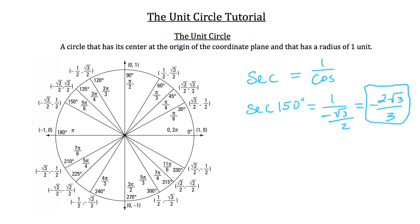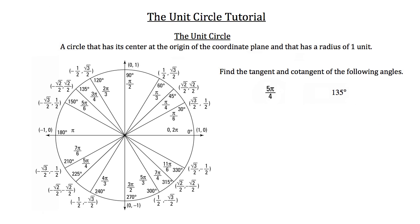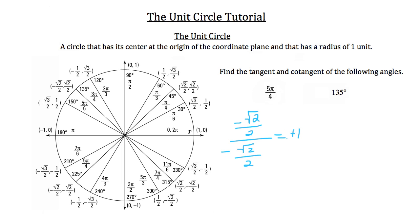Cotangent is simply 1 over tangent — or equivalently, cosine over sine. To find the tangent of 5 pi over 4, which occurs at 225 degrees on the unit circle, take the sine value, which is negative root 2 over 2, and divide by the cosine value, which is also negative root 2 over 2. A negative over a negative is positive, and anything divided by itself is 1. So the tangent of 5 pi over 4 is positive 1.